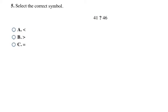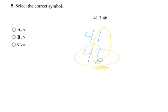Here I'm comparing 41 and 46. These numbers are small enough you might be able to compare without lining them up, but you can always use the method to check yourself. Looking at the columns, I have the same tens digit — 4 and 4 — and then different ones digits. The 6 is bigger, so 46 is the bigger number. Drawing my symbol eating the bigger number, 41 is less than 46. Final answer: choice A.